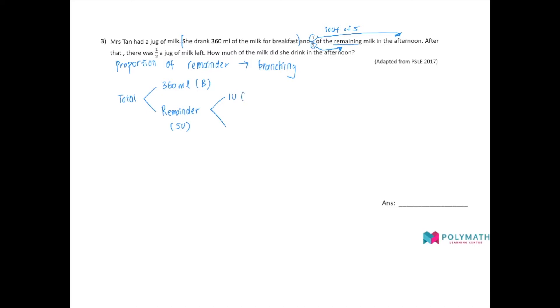Okay, so she drank one-fifth of the remaining milk in the afternoon. All right, so this is the afternoon portion. I'm going to label it A. So what's left if your remainder is five units and you drank one unit in the afternoon, what you have left ultimately in the end is four units. I'm going to label it left.